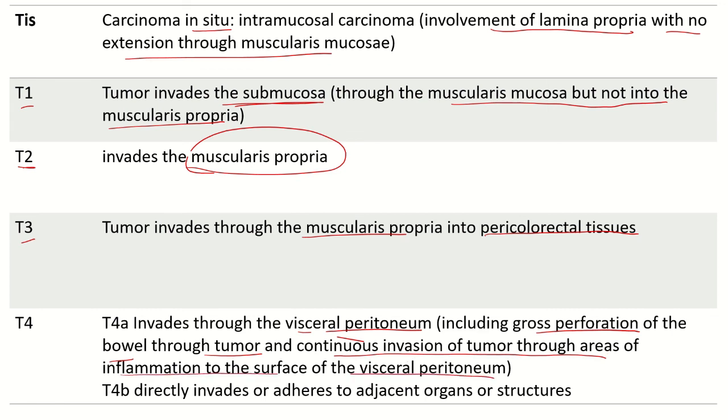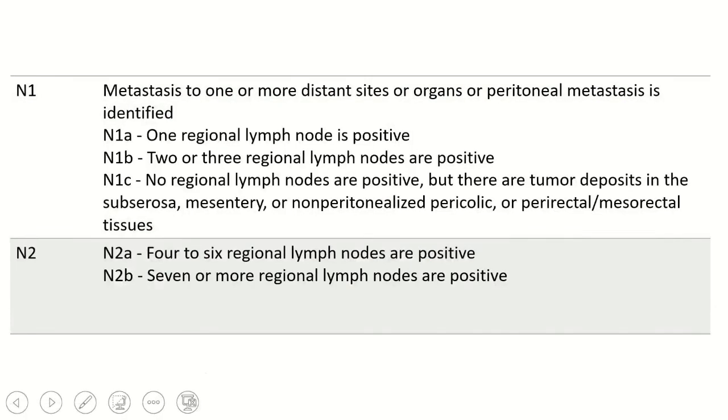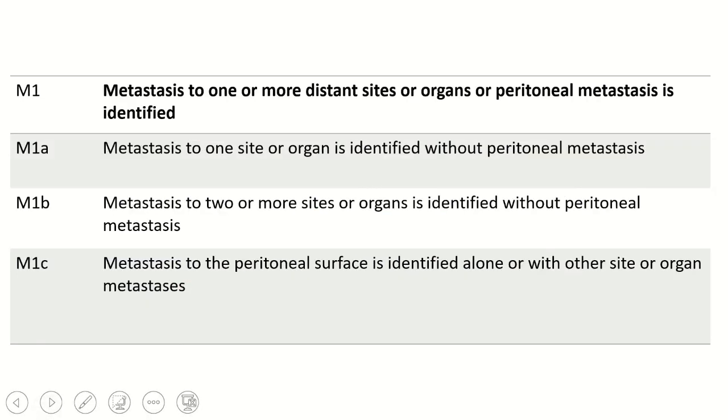N1 is divided into 1a, 1b, and 1c. 1a and 1b based on the number of regional lymph nodes involved: 1, 2 to 3. 1c, there are no regional lymph nodes positive, but tumor deposits in the subserosa, mesentery, and non-peritonealized pericolic, perirectal, or mesorectal tissues. N2a is number of lymph nodes 4 to 6. N2b is 7 or more lymph nodes. And M staging: M1 is presence of distant metastasis. M1a is one site, M1b is two or more sites, M1c is involvement of peritoneum.